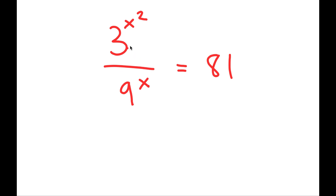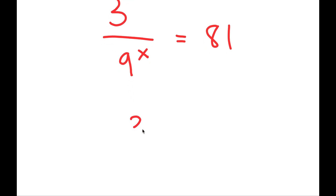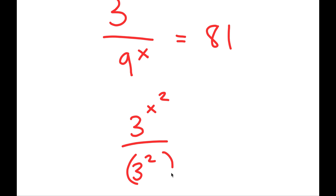We don't need to change 3 to the power of x squared because this is already a base of 3. But 9, I'm going to change to 3 squared, so I get 3 squared to the power of x. And 81, I'm going to change to 3 to the power of 4.